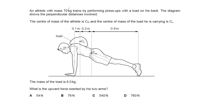In this question, an athlete with a mass of 70 kilograms trains by performing press-ups with a load on his back. The diagram shows the perpendicular distances involved. The center of mass of the athlete is marked cm, which is the point where the athlete feels the gravitational pull of the Earth. The center of mass of the load is cl, where the load experiences gravity. The mass of the load is 6 kilograms.